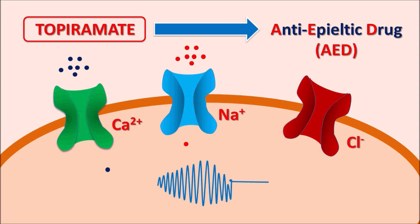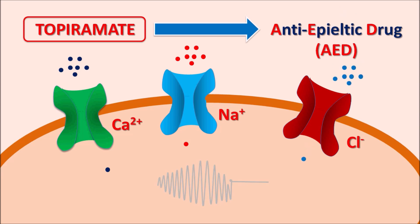These chloride channels are operated through a GABA-gated mechanism. When these chloride channels are activated, they can reduce the excitatory response. Topiramate is one of the anti-epileptic agents which can modulate this ion channel activity, thereby reducing the excitatory response within the CNS.